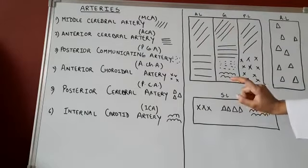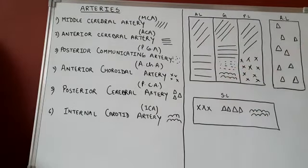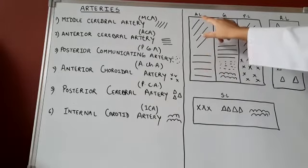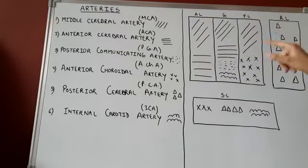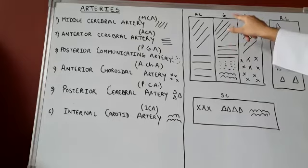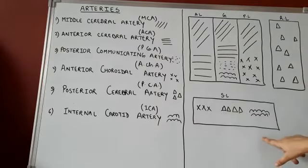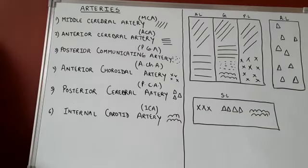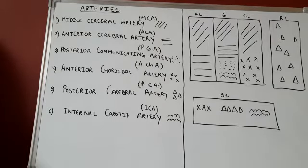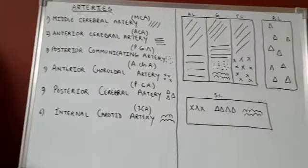I have drawn a table with 3 columns. The first column is for the anterior limb — AL stands for the anterior limb. The second column stands for the genu. The third is for the posterior limb. Then I have drawn a separate box for the retrolentiform part of the internal capsule, and then a separate box for the sublentiform part. Now, these symbols which I have drawn correspond to specific arteries.